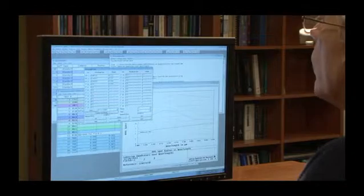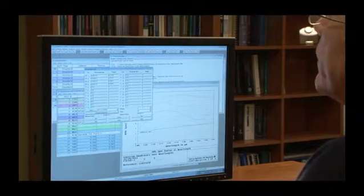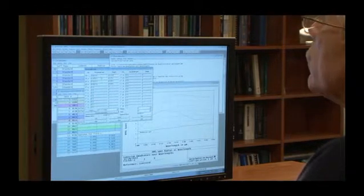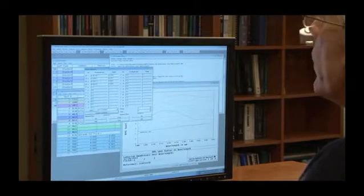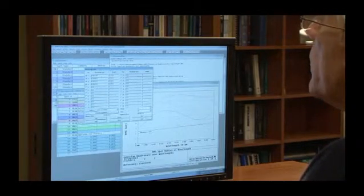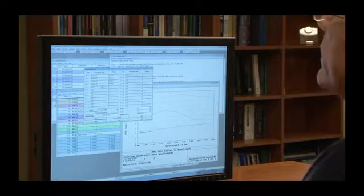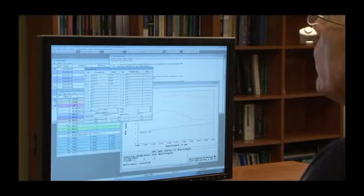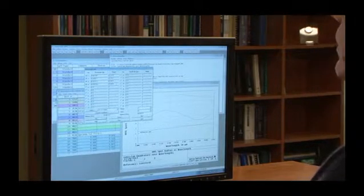And if I just press the Gaussian quadrature button, you'll see that it has now added in two extra intermediate wavelengths. I've got the same minimum and maximum wavelengths, I've got two new intermediate wavelengths, and I've got some weights calculated like so.